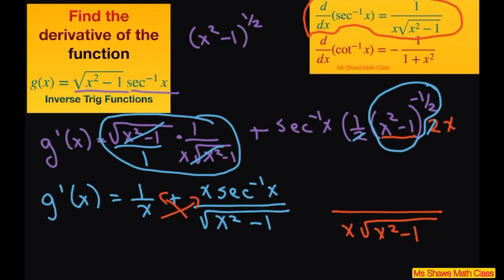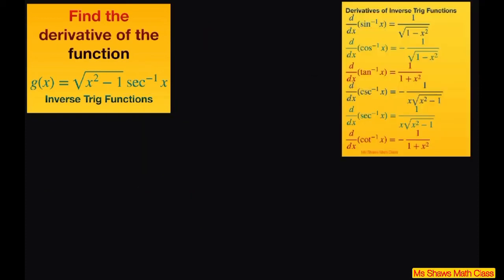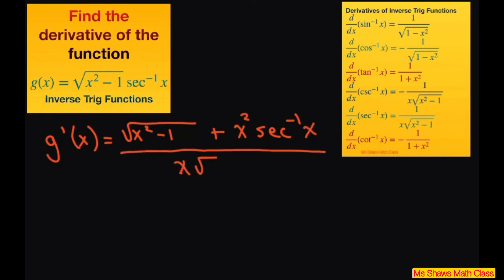if you do that, you can write this as g prime of x equals square root of x squared minus 1 plus x squared times secant inverse of x, all divided by the common denominator, which is x times the square root of x squared minus 1.